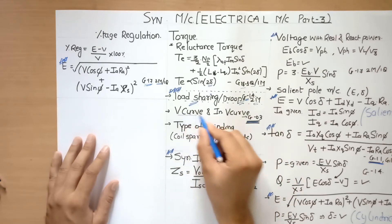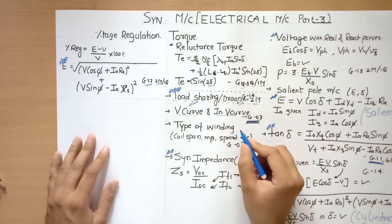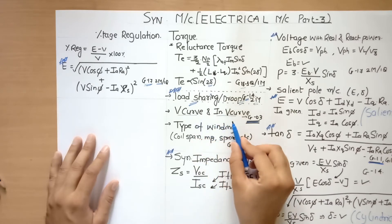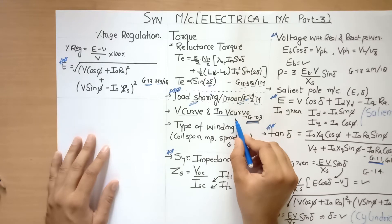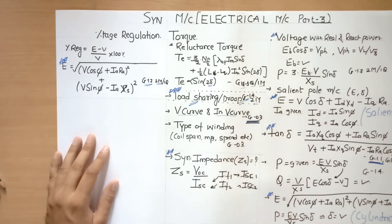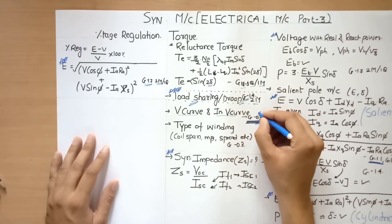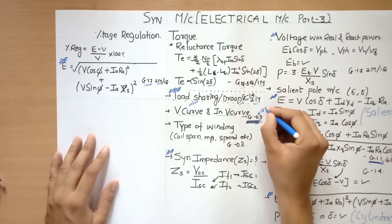Also, if you know V curve and inverted V curve, that is variation of armature current and power factor with field excitation, you have to understand for alternator and synchronous motor. They are generally reverse of each other. This was asked in gate 2003.